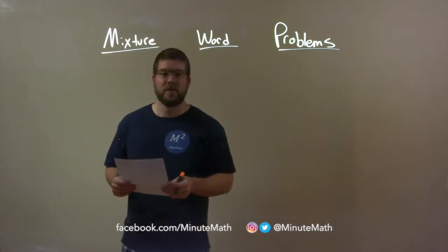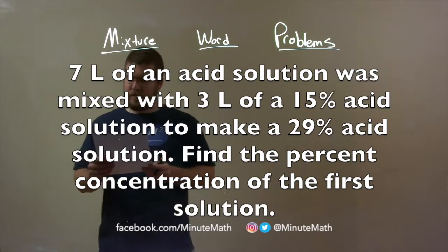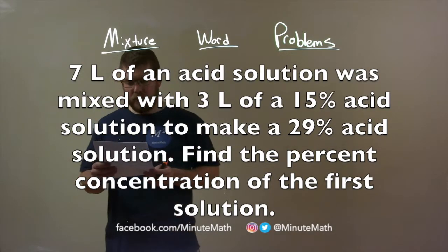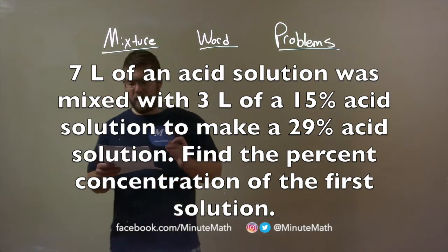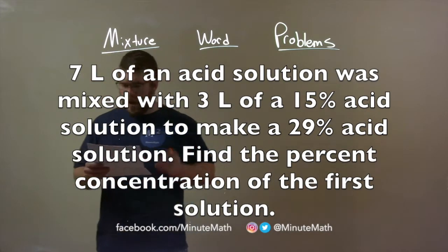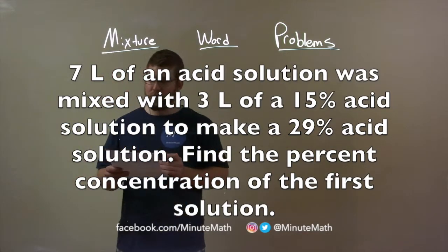So, if I was given this problem: 7 liters of an acid solution was mixed with 3 liters of a 15% acid solution to make a 29% acid solution. Find the percent concentration of the first solution.